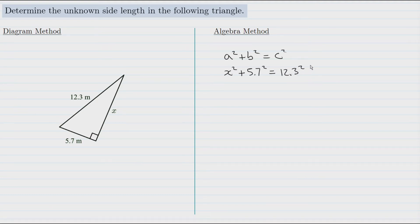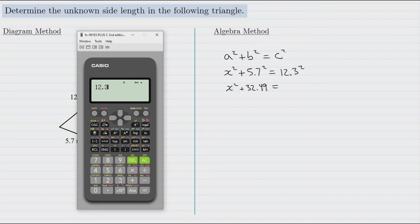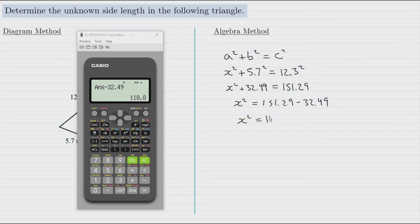We can find the value of 5.7 squared and 12.3 squared using a calculator. 5.7 times itself gives us 32.49. So we have x squared plus 32.49 equals 12.3 squared. Using the squared button on the calculator, 12.3 squared is 151.29. To solve for x, we subtract 32.49 from both sides of the equation. It disappears on the left, and on the right we get 151.29 minus 32.49, which gives us 118.8. So x squared equals 118.8.